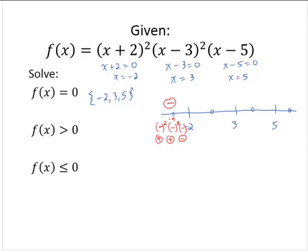Choosing a number between negative 2 and 3, how about 0? 0 plus 2 is positive, and that's being squared. 0 minus 3 is negative, and that's being squared. And 0 minus 5 is negative. So this gives me a positive times a positive times a negative, which is again negative.